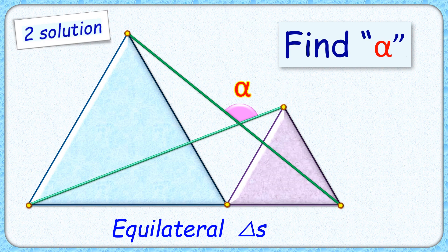Welcome to this interesting question. Given two equilateral triangles, these green line segments are formed by joining the vertices of these triangles. The exciting part is with this limited data, we have to find the value of angle alpha.